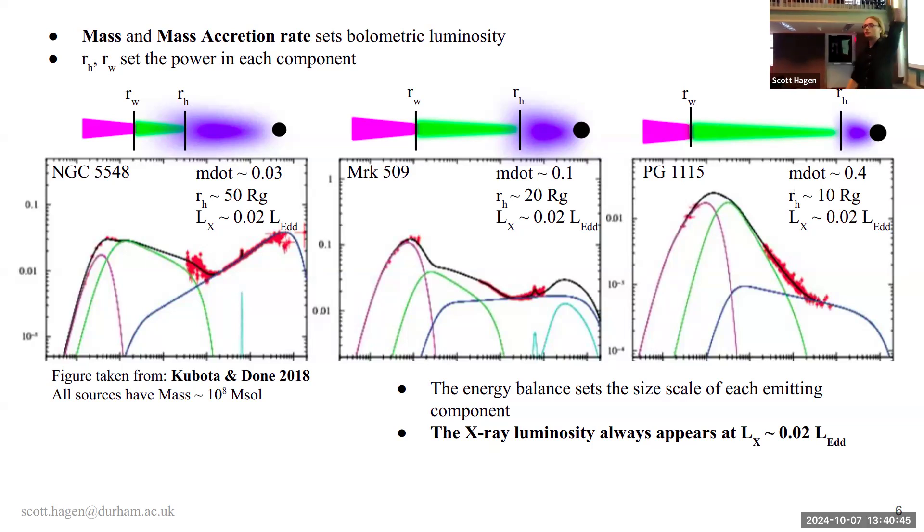And so you could do, to first order, use the SED to estimate the size scale of each of your energetically components. What I mean is, if you have really, really strong UV emission and quite a weak X-ray, that's probably telling you the system is mainly disk-dominated, and you don't have much X-ray plasma, whereas if you're very much dominated by X-ray, and you've got very weak EUV, then that tells you it's all the way around. You're probably mostly plasma, not much disk at all.